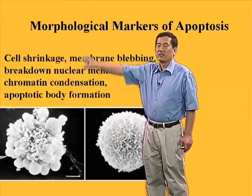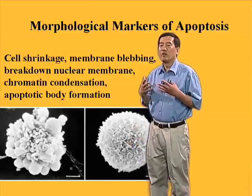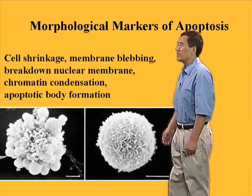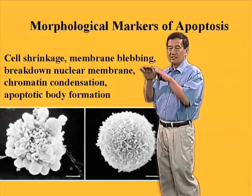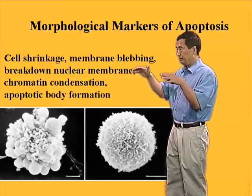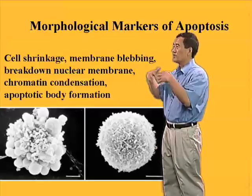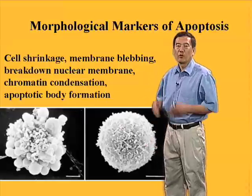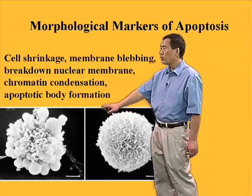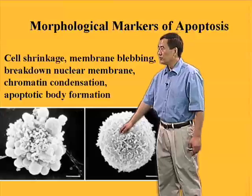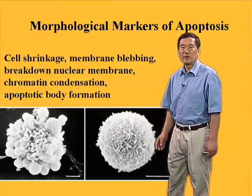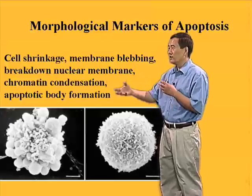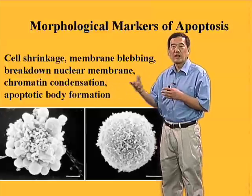The initial description of apoptosis is mostly based on its morphological changes associated with this form of cell death. These morphological changes include cell shrinkage, membrane blebbing — meaning that in normal cells the membrane is relatively smooth and rigid, but during apoptosis the membrane starts waving, which we call blebbing. Some organelles in the cell, such as the nuclear membrane, will break down during apoptosis. The chromatin will condense, and finally small membrane-bound vesicles called apoptotic bodies form, literally slipping off the cell, to be rapidly phagocytosed by macrophages and neighboring cells.